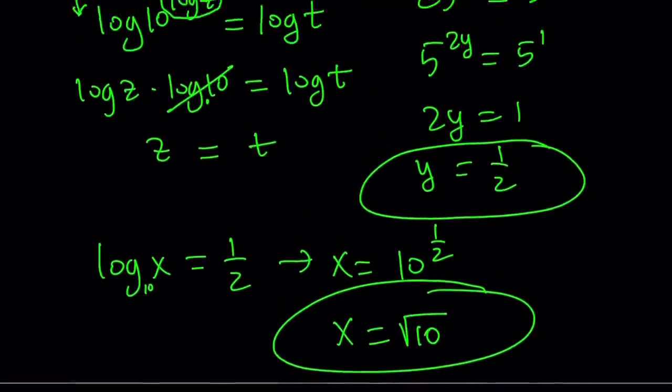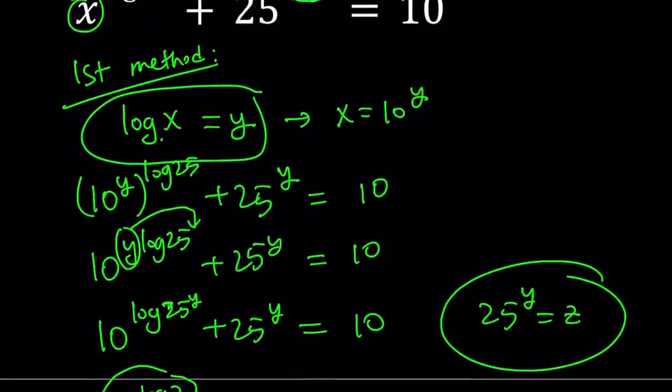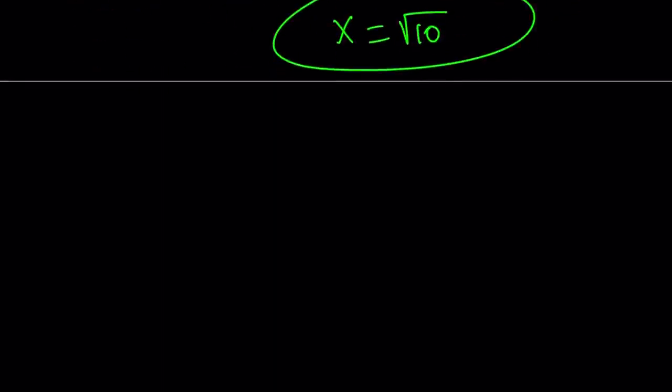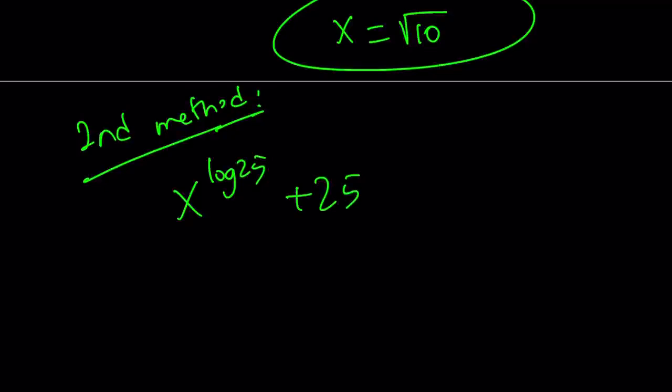Finally, from here, since the base is 10, that means x is equal to 10 to the power 1 half, which means x is equal to square root of 10. And it's in the domain because square root of 10 is greater than 0. Remember, we have to check the domain. Log x is only defined when x is positive. Was this the first method? No, it was the second method, right? This was the first method. Let's go ahead and talk about the second method.